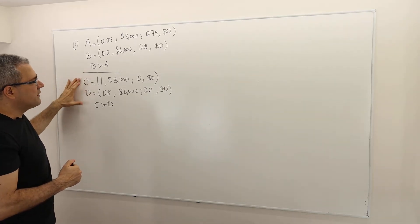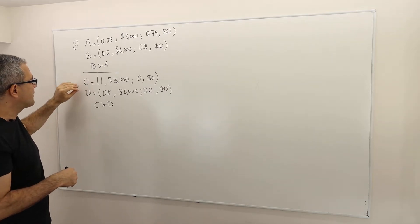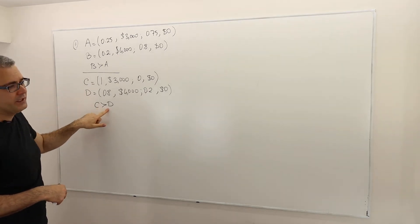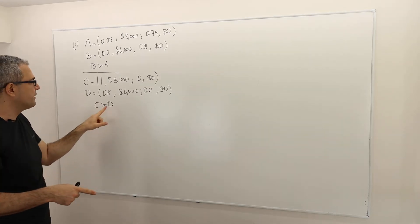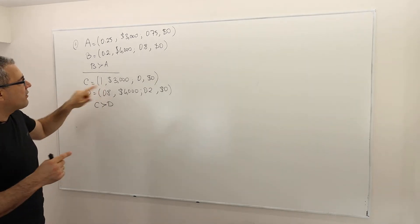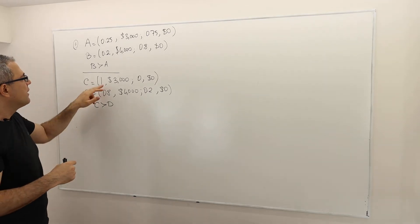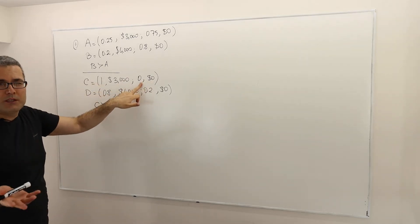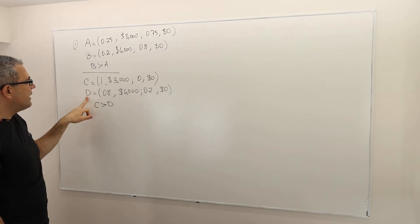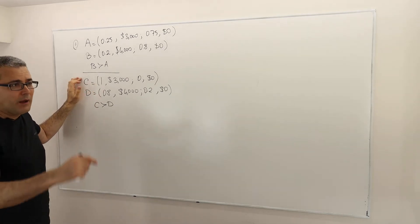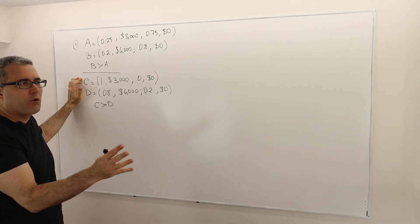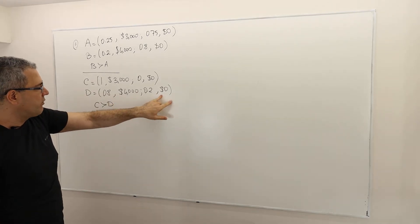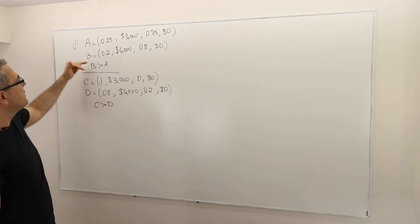Now in the second scenario, the same decision maker is asked to choose one of two lotteries, C and D, and he chooses C over D — he strictly prefers C over D. Lottery C is what we call a sure lottery: he wins $3,000 for sure with probability one, and $0 with probability zero. Lottery D, however, is a risky lottery where you can win $4,000 or $0 with the respective probabilities.